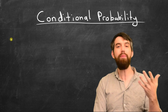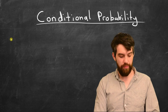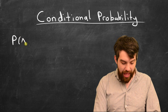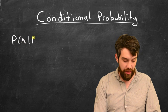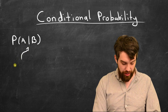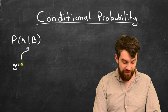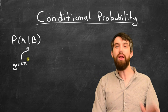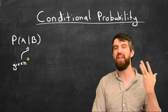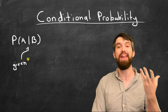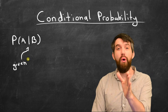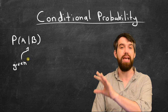The way we write this down is with the following notation. We're going to refer to the probability of A given B. This vertical bar is read as 'given.' What it means is: this is the probability of A — the thing I want, the thing I'm investigating — given that I know that this event B has occurred.